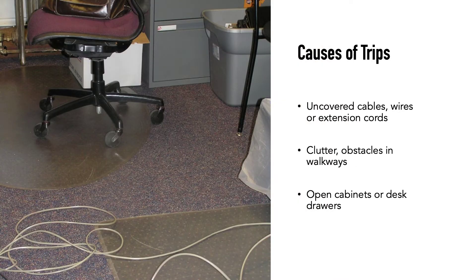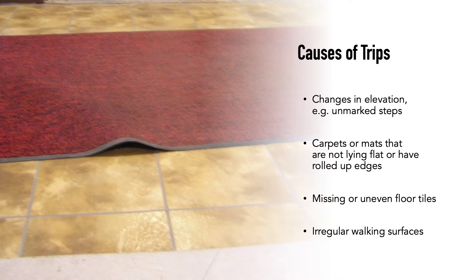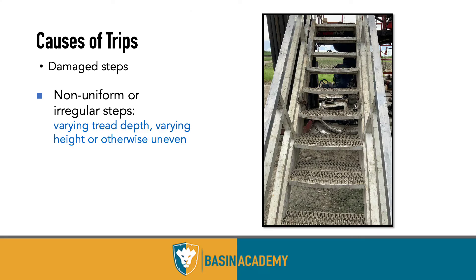Causes of trips include uncovered cables, wires, or extension cords — statistically very common — clutter and obstacles in walkways, open cabinet or desk drawers, changes in elevation such as unmarked steps, carpets or mats not lying flat or with rolled-up edges, missing or uneven floor tiles, and irregular walking surfaces. One photo here shows stairs that are a personal trip hazard — even knowing they were uneven, I'd nearly trip every time while inspecting a rig.